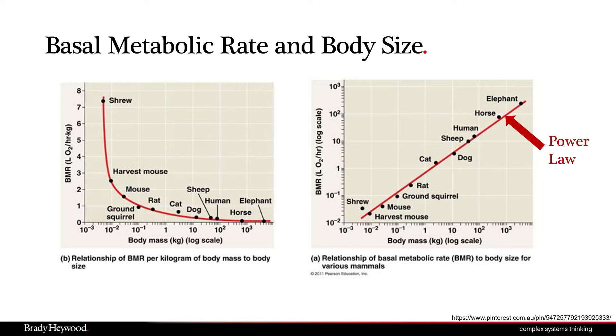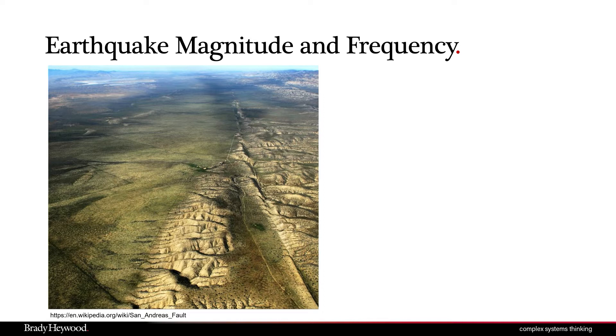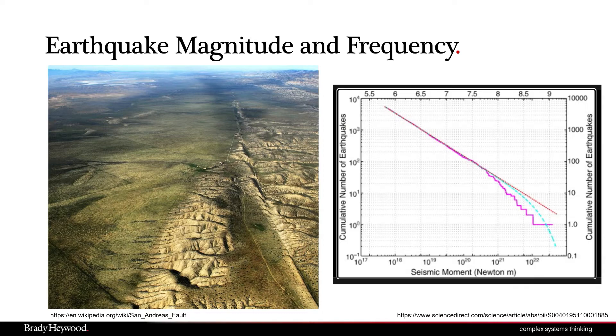This power law covers a wide range of animal sizes — there's something about the systems underpinning these animals that produces these relationships. And it turns out this power law relationship isn't just for metabolic rate. You get power laws for body size versus gestation period, body size versus heartbeat, and in a whole variety of different types of systems. For example, when you look at earthquakes, plotting magnitude against frequency of occurrence on a log-log scale gives a power law: earthquakes with really high magnitude don't happen often, whereas low-magnitude earthquakes happen much more frequently.